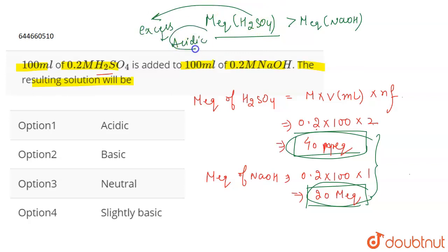When H2SO4 is present in excess, the resulting solution is going to be acidic. So your answer is option number one. That's all for the question.